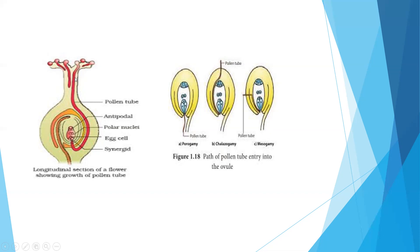Once the pollen tube is formed, it passes through the style and then enters into the ovary. It then penetrates into the ovule. The pollen tube penetrates into the ovule by three ways: porogamy, chalazogamy, and mesogamy.